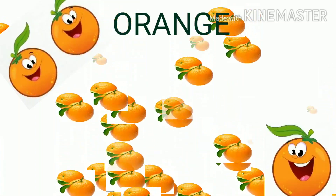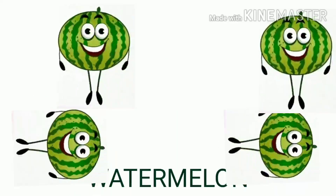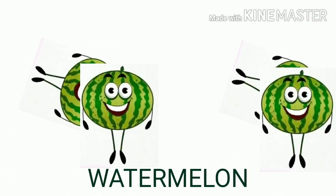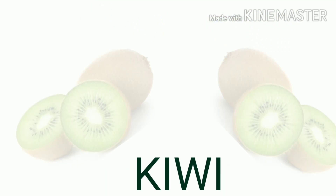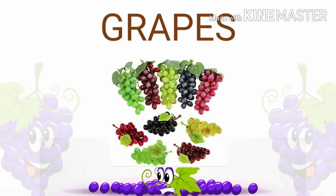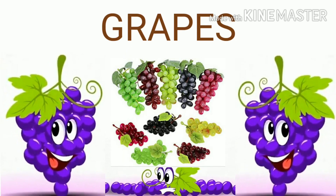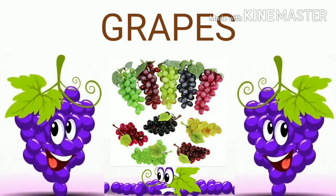O-R-A-N-G-E, orange. Orange means 'santra' (संतरा). W-A-T-E-R-M-E-L-O-N, watermelon. Watermelon means 'tarbuj' (तरबूज). K-I-W-I, kiwi. Kiwi means 'kiwi'. G-R-A-P-E-S, grapes. Grapes means 'angoor' (अंगूर).